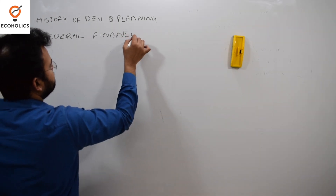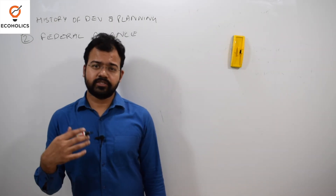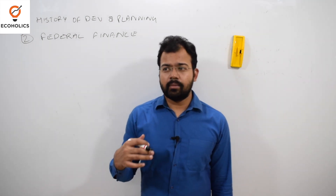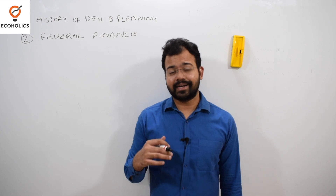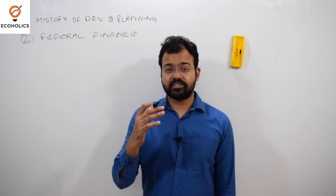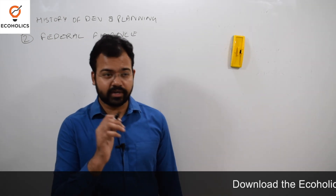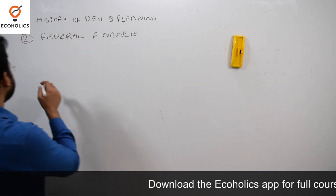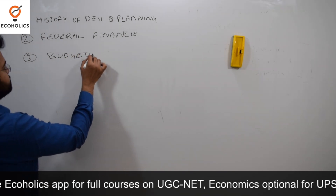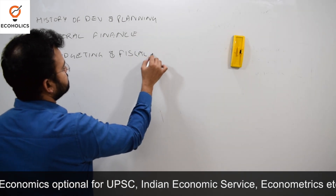Under federal finance, there are certain important reports like the Sarkaria Commission report. You will find a question every three years on the 73rd and 74th Constitutional Amendment Act regarding Panchayats and municipalities — that is rural and urban local bodies, the three-tier government. This third-tier government topic is very vital. The third topic is budgeting and fiscal policy.